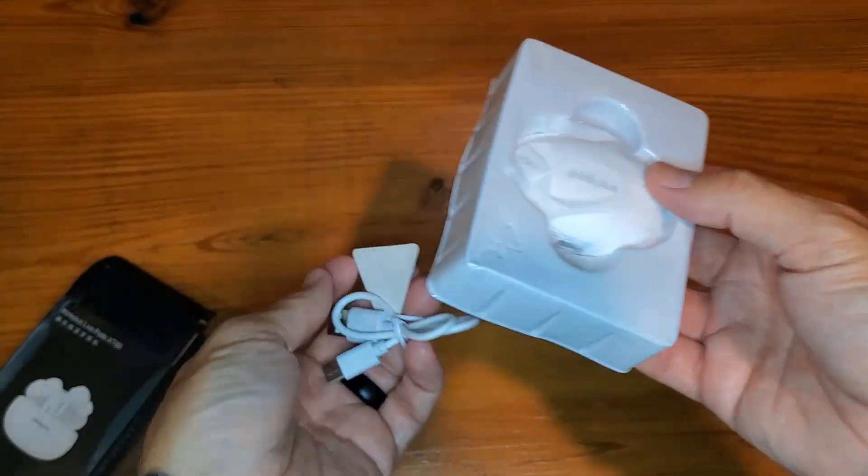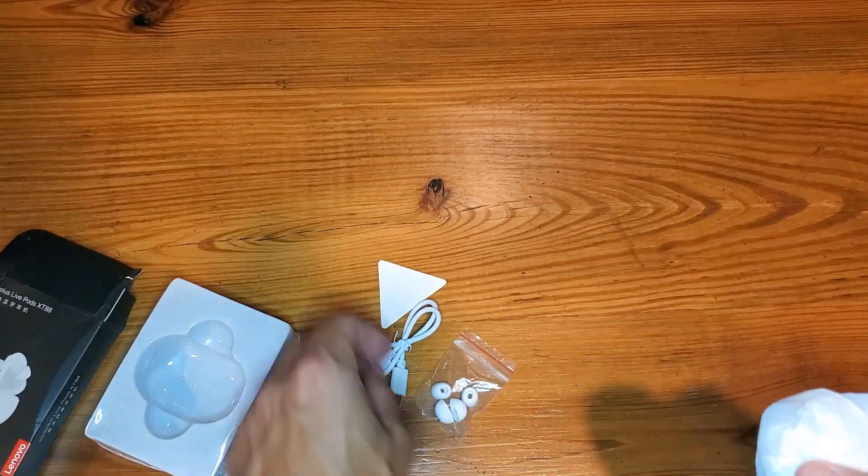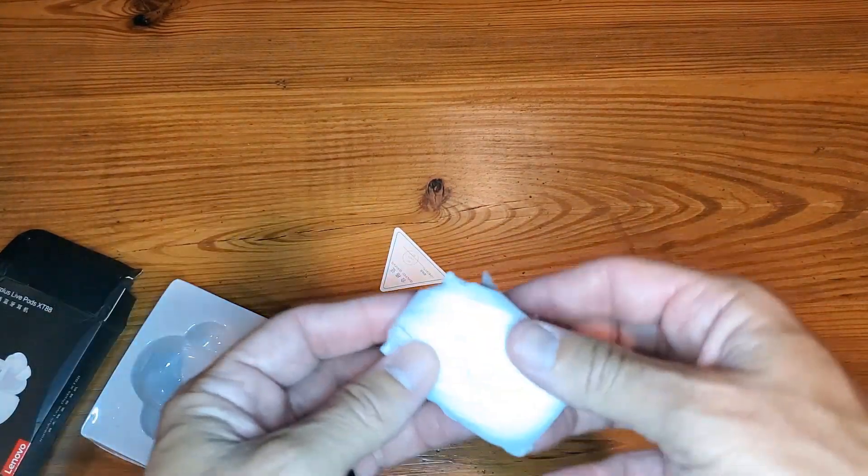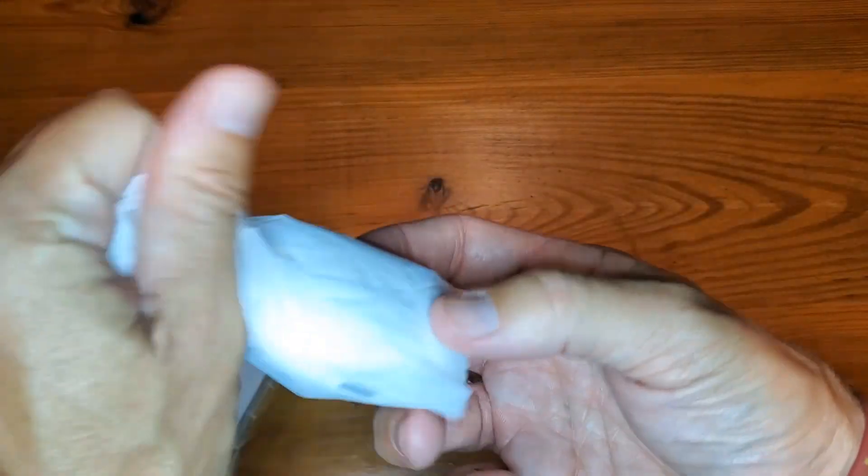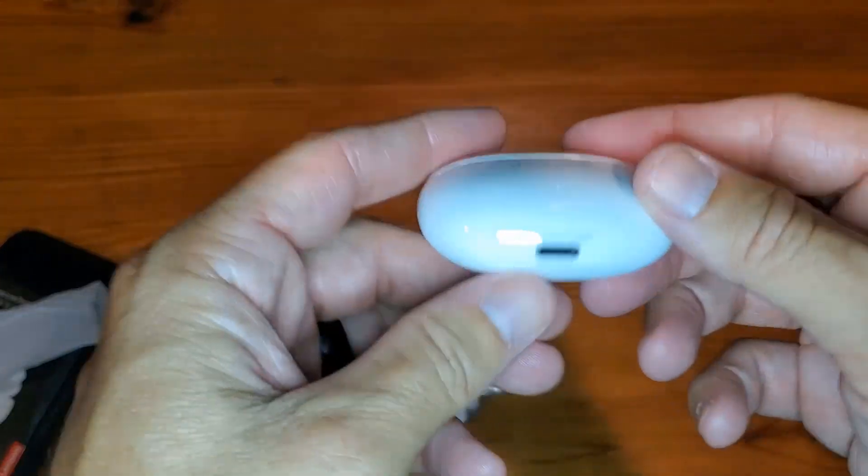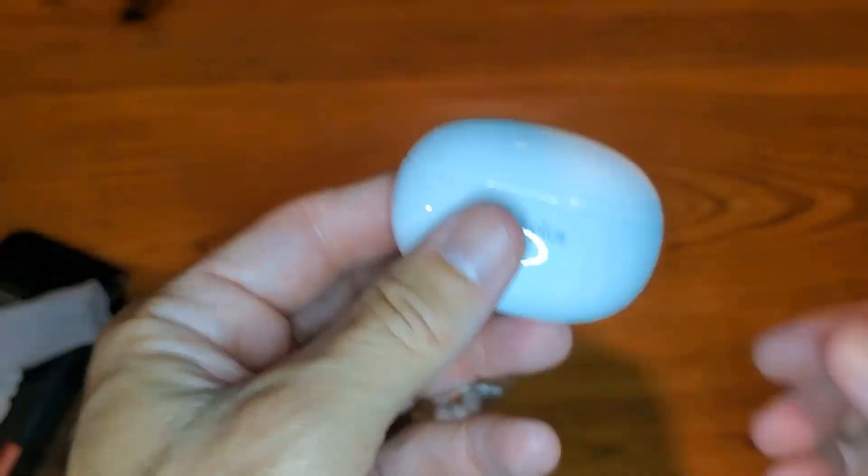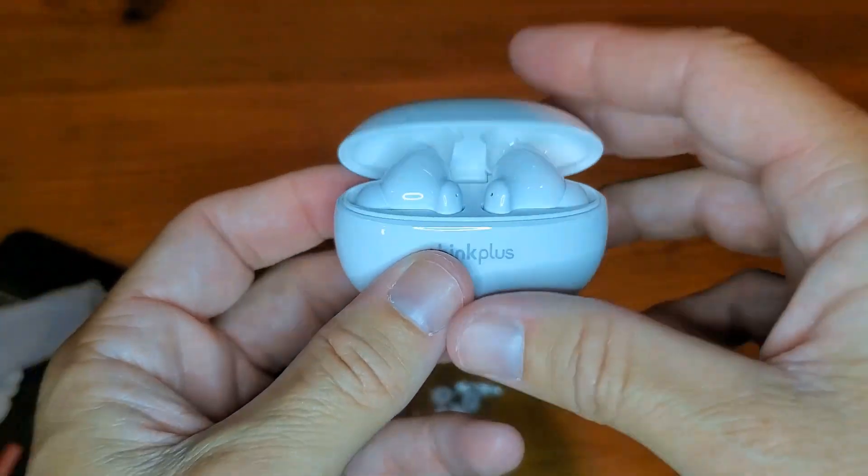They come in a nice little container here with all the appropriate items you're looking for. A very tiny pod—this thing is really small—USB-C charging, and a very nice adapter.